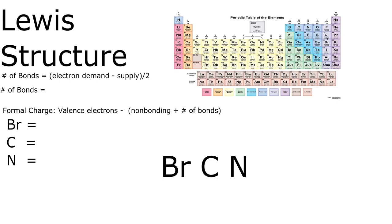Bromine is a halogen found in group 17, so 7 valence electrons. Carbon is found in group 14, plus 4 valence, plus 5 valence for nitrogen because it is found in group 15. That is 16 total valence electrons. So that is our supply in this formula.